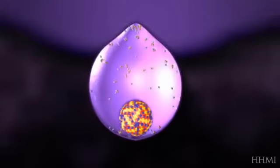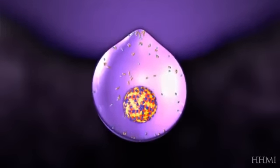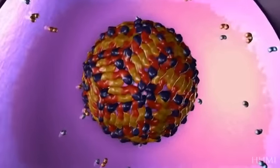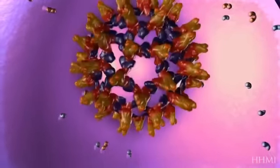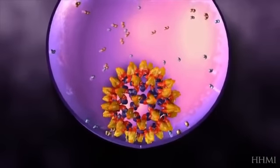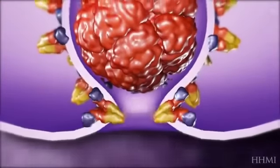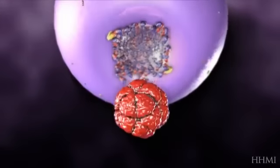When endosomes form, proton pumps lower the pH of the interior. The virus responds to the lowered pH by changing the conformation of the envelope proteins to form spike-like structures. The tips of the spikes are hydrophobic, which allows them to penetrate the endosome's membrane. They bend until the endosome's membrane and the virus's membrane fuse together and release the capsid into the cytoplasm.